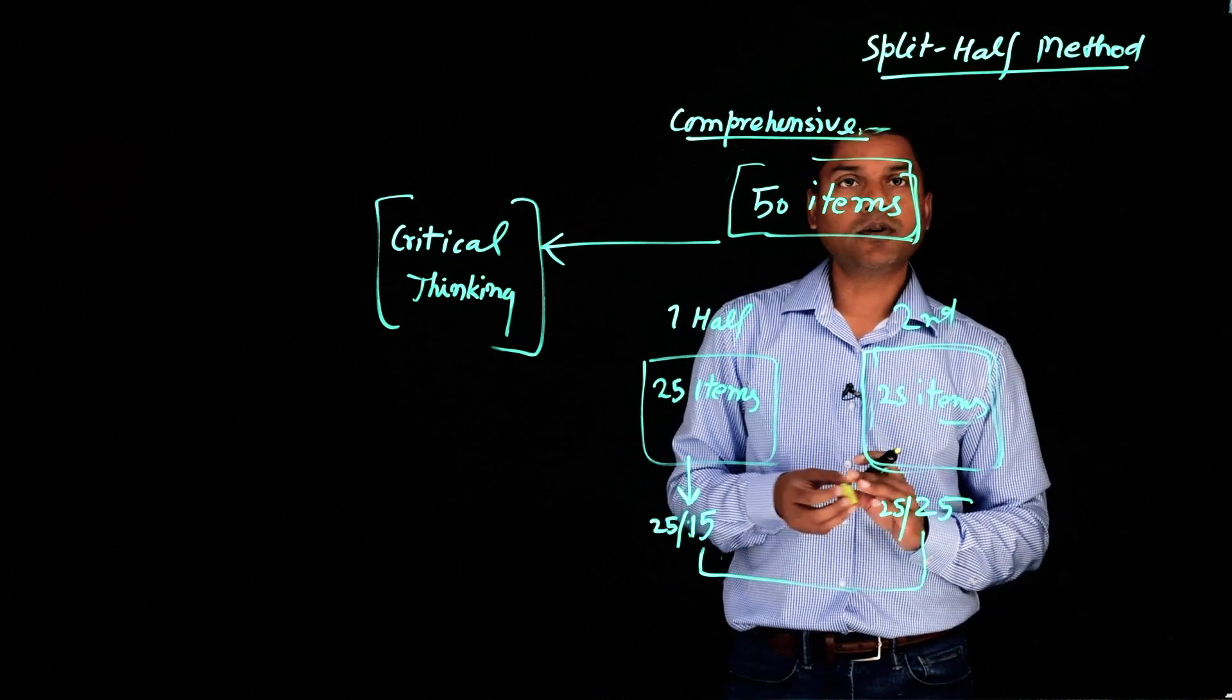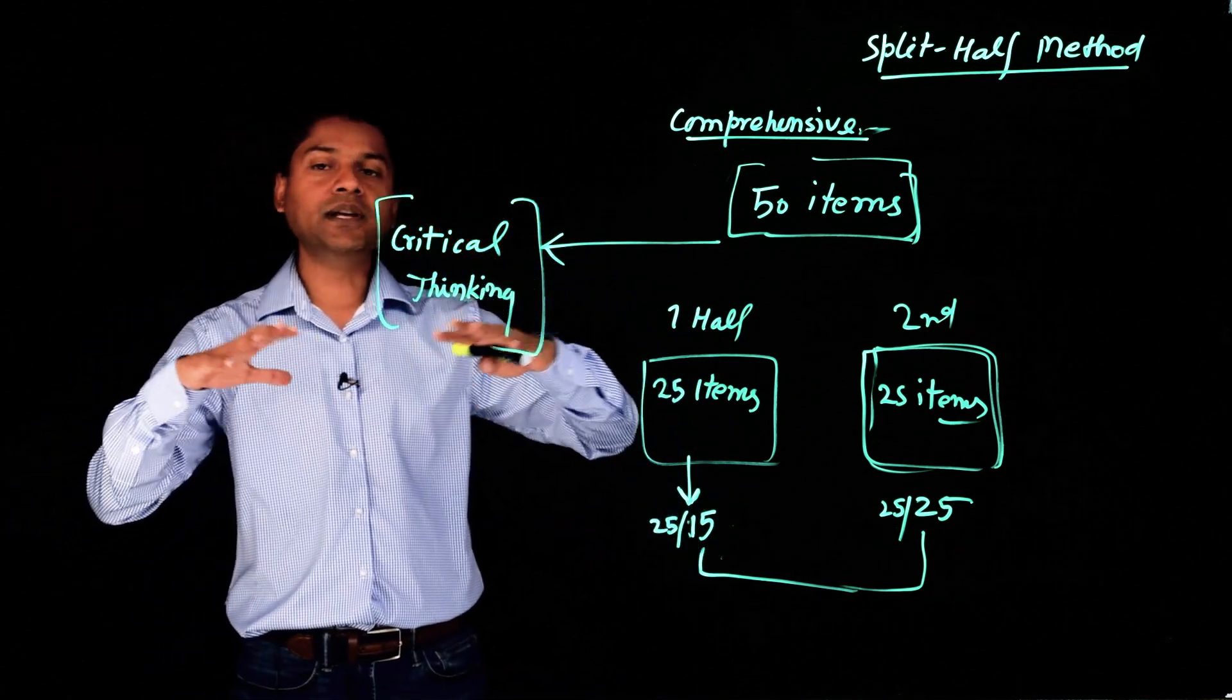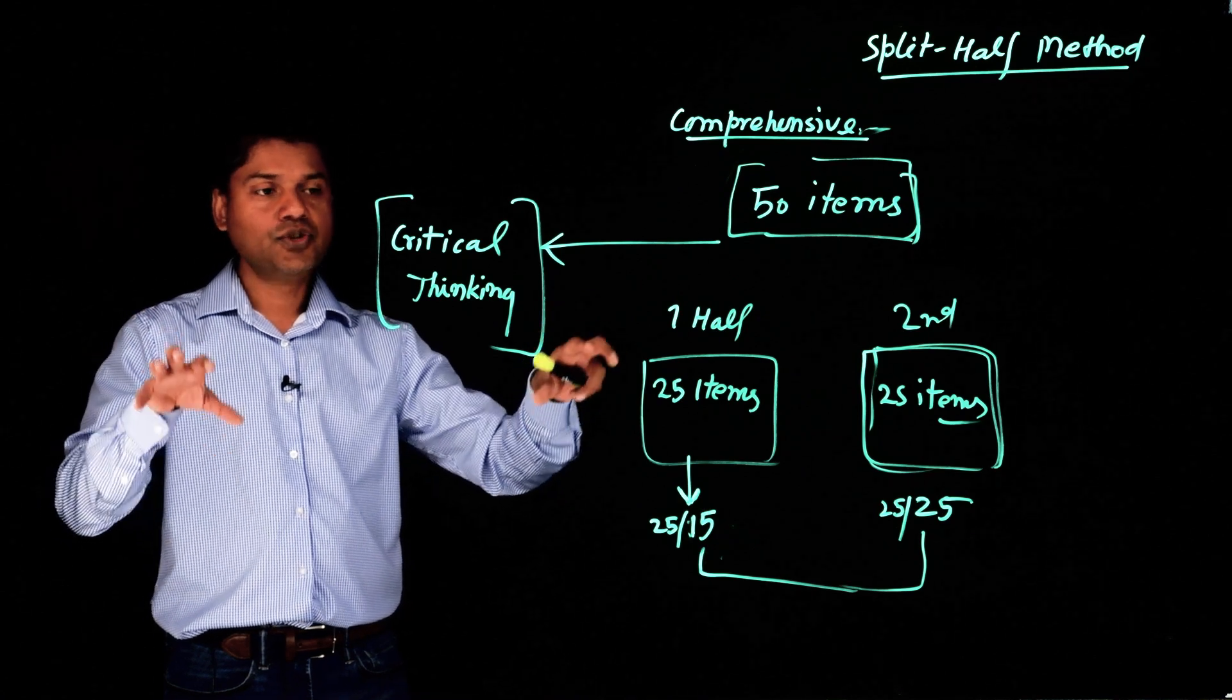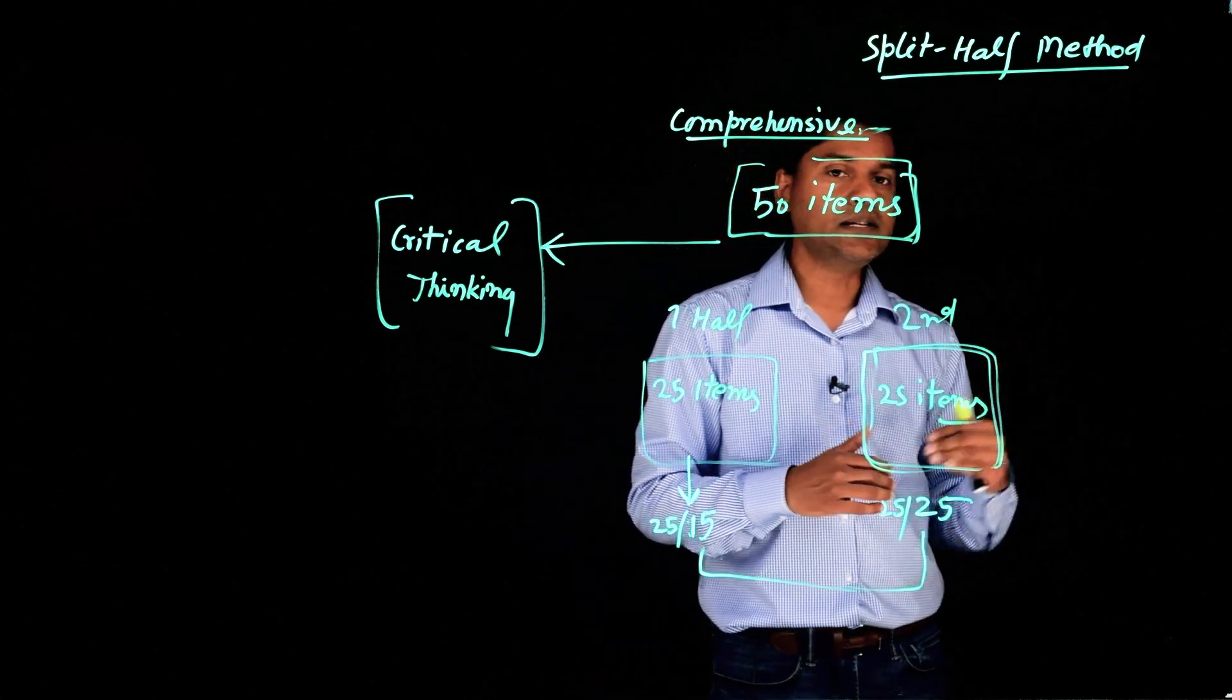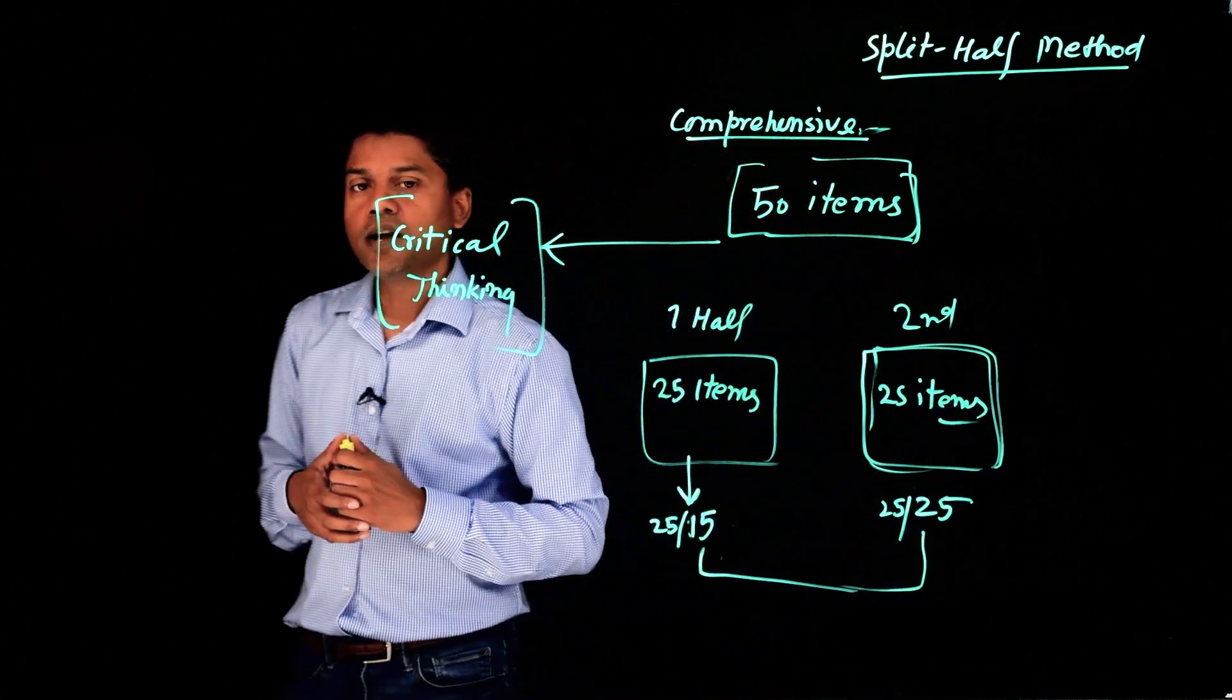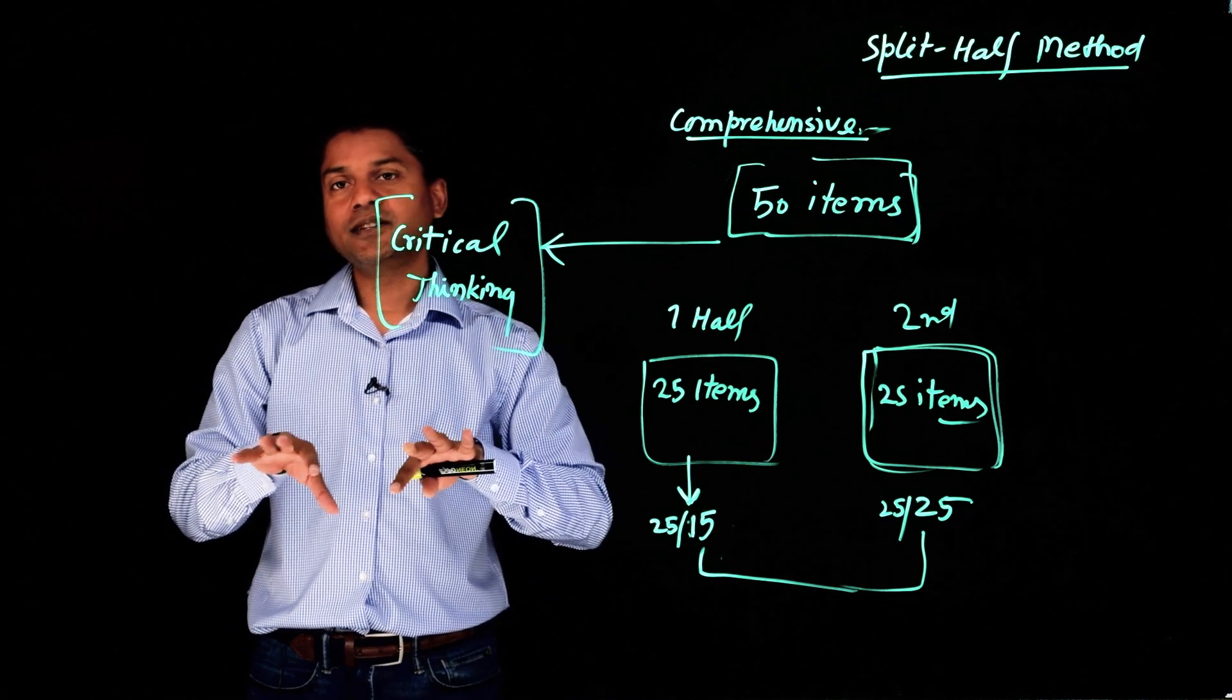So that's about split-half method of measuring reliability. Let's summarize it. What we do is we develop first a very comprehensive list of items, and then we split them in half. And then we give these two half tests to same participants and we see how the scores are consistent. If there is high consistency, high similarity, then this test has high correlation, high reliability. And if not, then low reliability. And that's why we call it split-half, because we are splitting it in half.